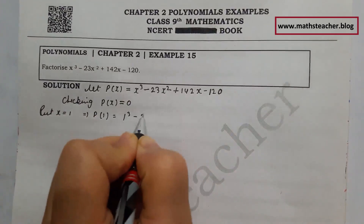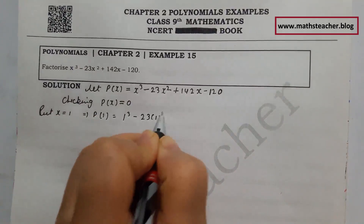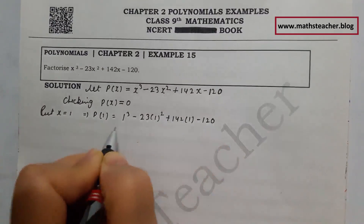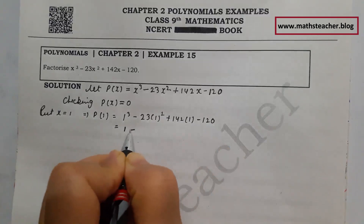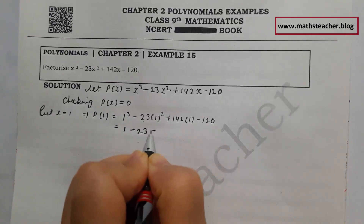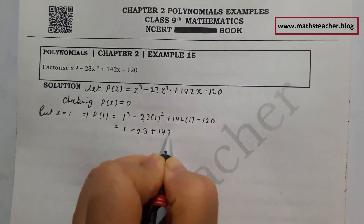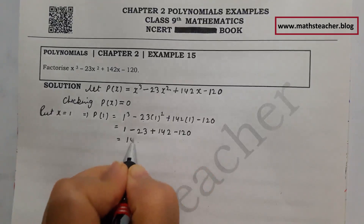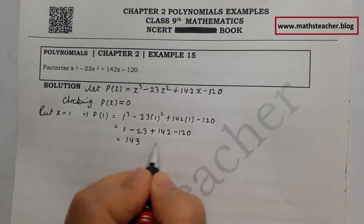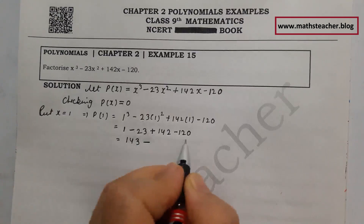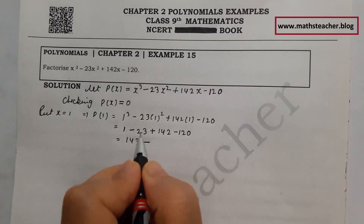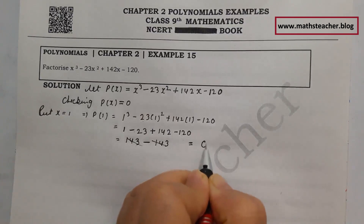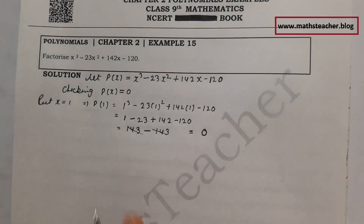So let's check — put x equal to 1 and see if p(1) equals 0. Wherever you see x, put 1. p(1) = 1 cube minus 23 times 1 square plus 142 times 1 minus 120 = 1 minus 23 plus 142 minus 120.